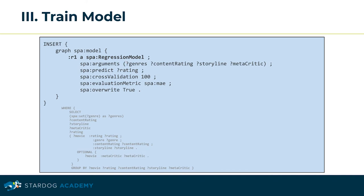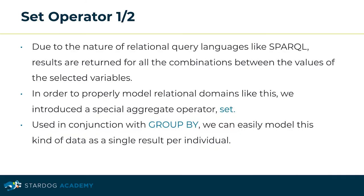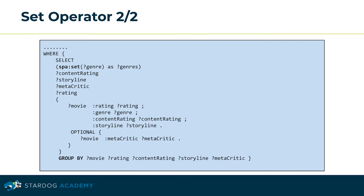There is a new feature I'd like to discuss here — the set operator. Due to the nature of relational query languages like SPARQL, results are returned for all combinations between values of the selected variables. To properly model relational domains, we introduced a special aggregate operator called the set operator. The set operator is used in conjunction with GROUP BY and allows us to easily model this kind of data as a single result per individual. In the WHERE clause, we use the spa:set operator as an aggregate operator for the selected genre variable, modeling the genre data as a single result per individual in conjunction with the GROUP BY operator.